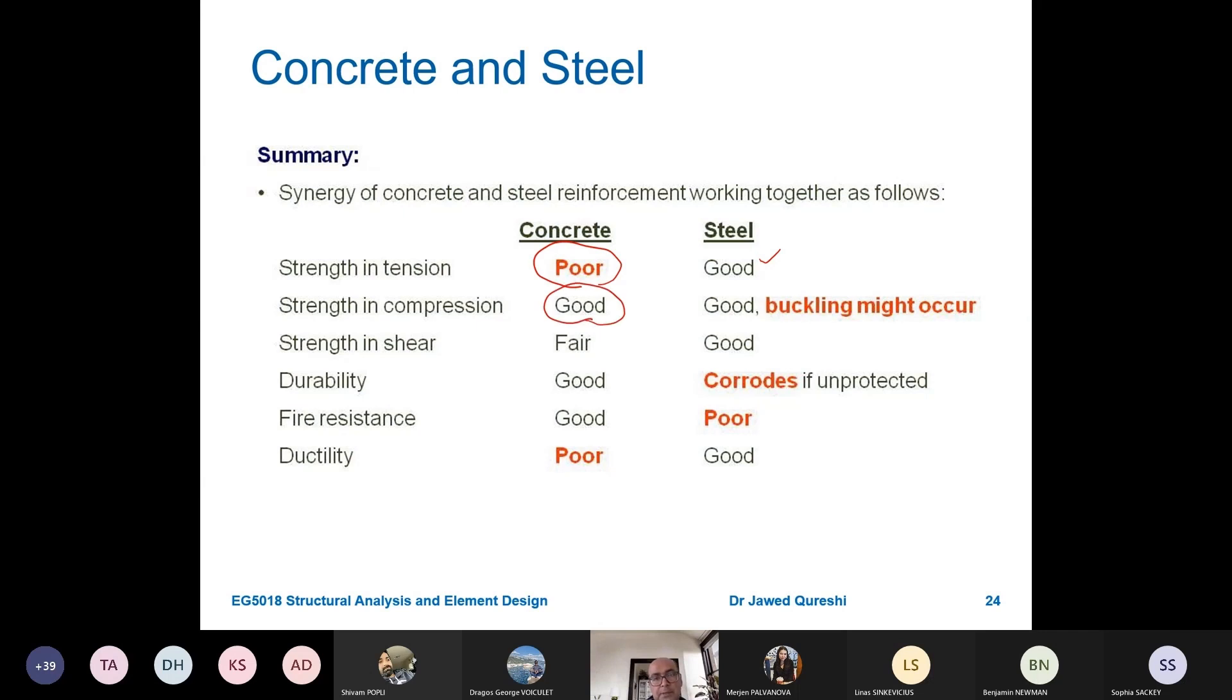Strength in compression is very good in compression. Equally steel is very good in compression as well but buckling might happen. The good thing about concrete is that buckling doesn't happen. Steel is strong and thin, that's why buckling happens. Strength in shear is fair, and strength in the steel is alright. Durability is fine, and steel corrodes if unprotected. Fire resistance is good for concrete, poor for steel.